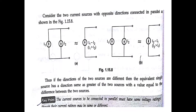If two current sources are in opposite directions, the equivalent is the difference. In figure A, I1 is upward and I2 is downward, so the equivalent is I1 minus I2 (when I1 is greater). In the second figure, if I2 is downward and greater, the equivalent is I2 minus I1. The direction of the equivalent current source is the same as that of the greater source. Current sources in parallel must have the same voltage rating, though their current ratings may differ.